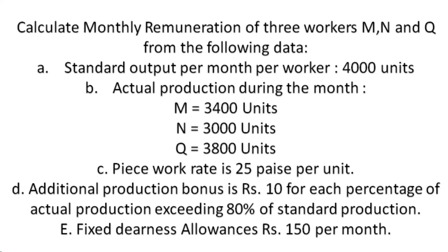The additional production bonus is rupees 10 for each percentage of actual production exceeding 80 percent of standard production. So for those workers who have produced more than 80 percent of standard, for each percentage above 80 percent they will get 10 rupees.